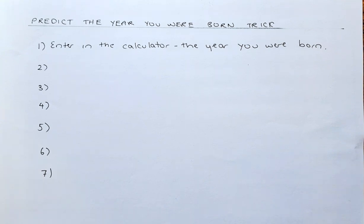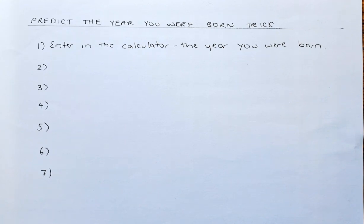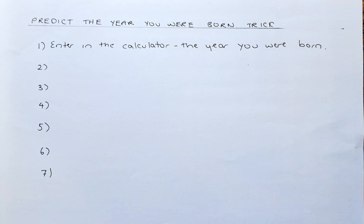First, you need a calculator as the calculation can be quite complicated. And secondly, while you are doing all the calculations, make sure you enter the equal sign after each step for this trick to work. So here are the steps.